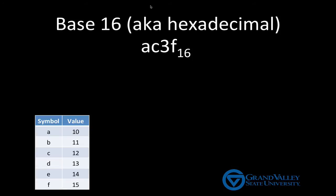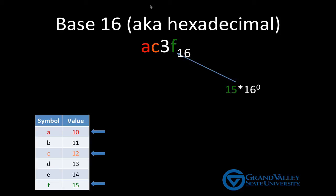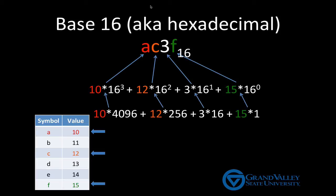So let's look at AC3F base 16. As the table shows, A represents a group of 10, C represents a group of 12, and F represents a group of 15. Thus, AC3F in hexadecimal means 15 times 16 to the 0 power, plus 3 times 16 to the 1st power, plus 12 times 16 squared, plus 10 times 16 cubed. So we'll expand the powers of 16, multiply this out, add up the terms, and see that AC3F in hexadecimal is 44,095 in base 10.